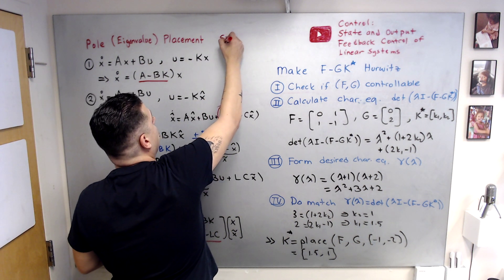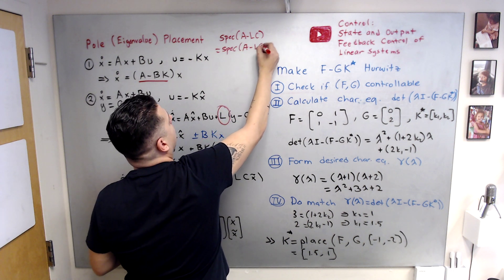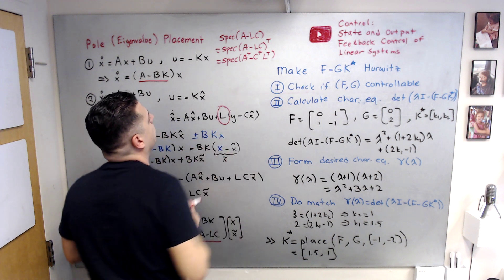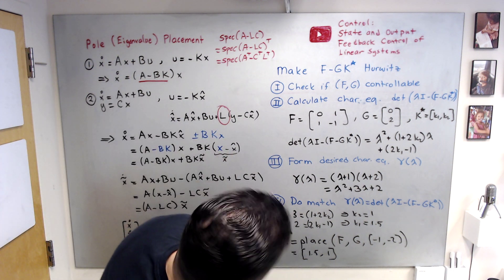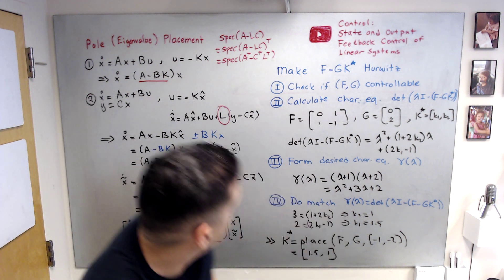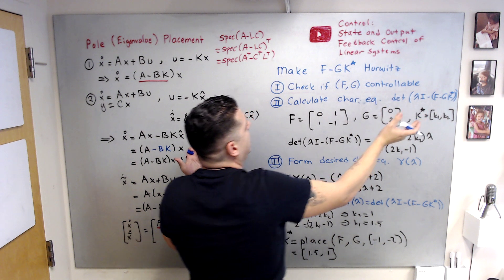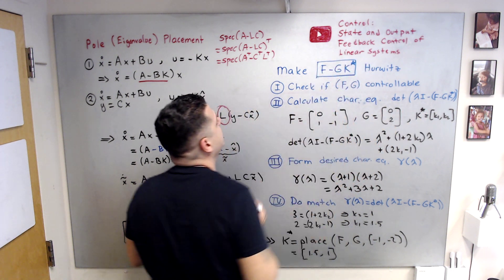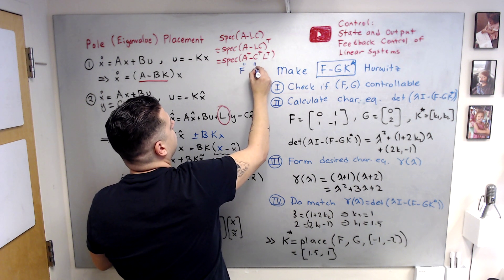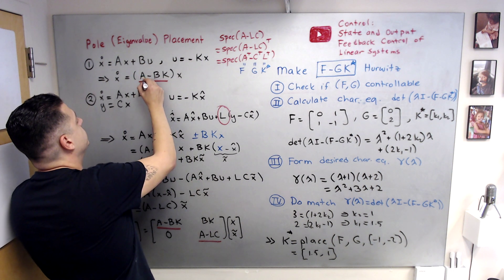The spectrum of A - LC equals the spectrum of its transpose, A^T - C^T·L^T, since eigenvalues are invariant under transposition. So we need to choose L^T to make A^T - C^T·L^T Hurwitz. This structure is similar to F - GK*, so I will explain pole placement in the unified context of making F - GK* Hurwitz. For the state control problem, F = A, G = B, K* = K. For the observer problem, F = A^T, G = C^T, K* = L^T.